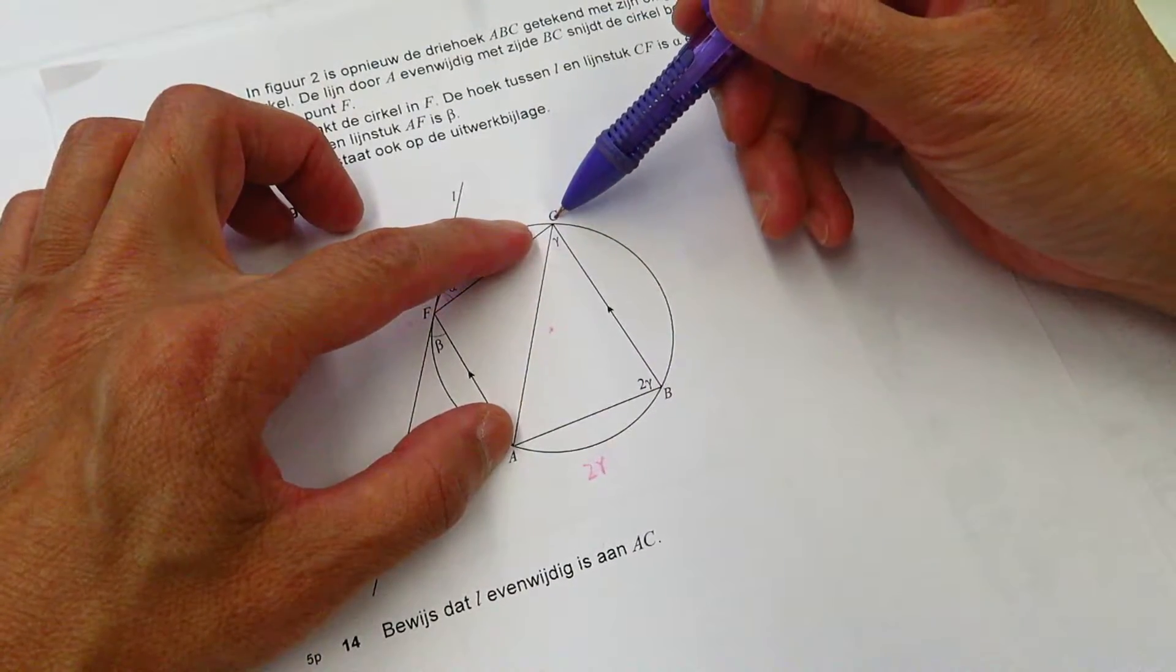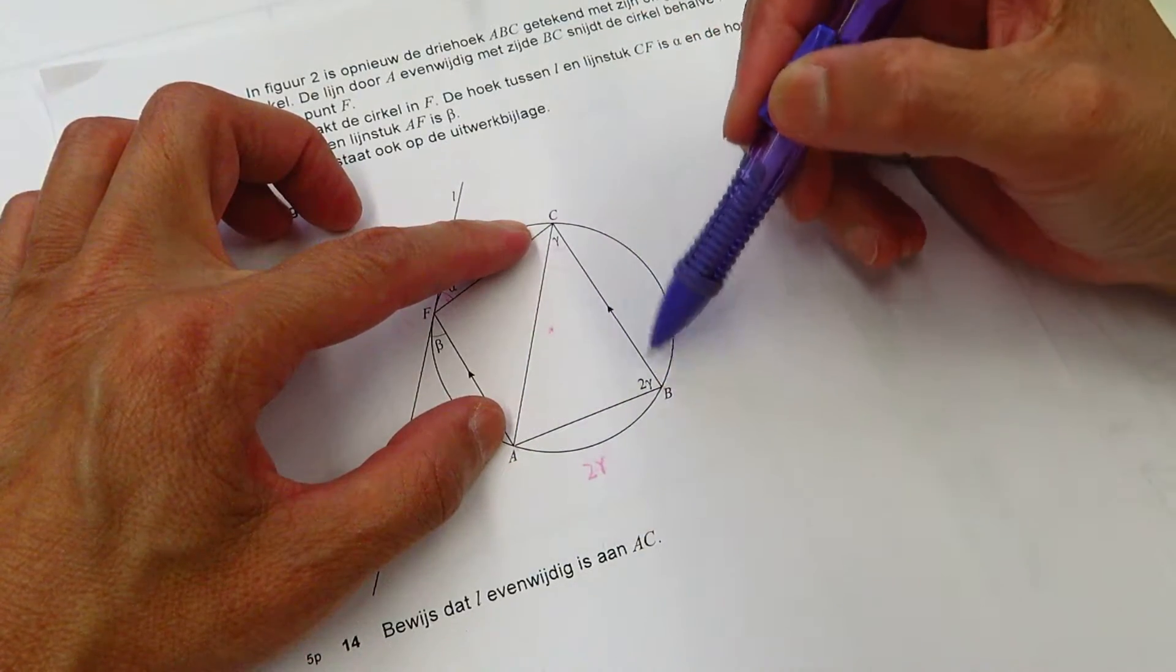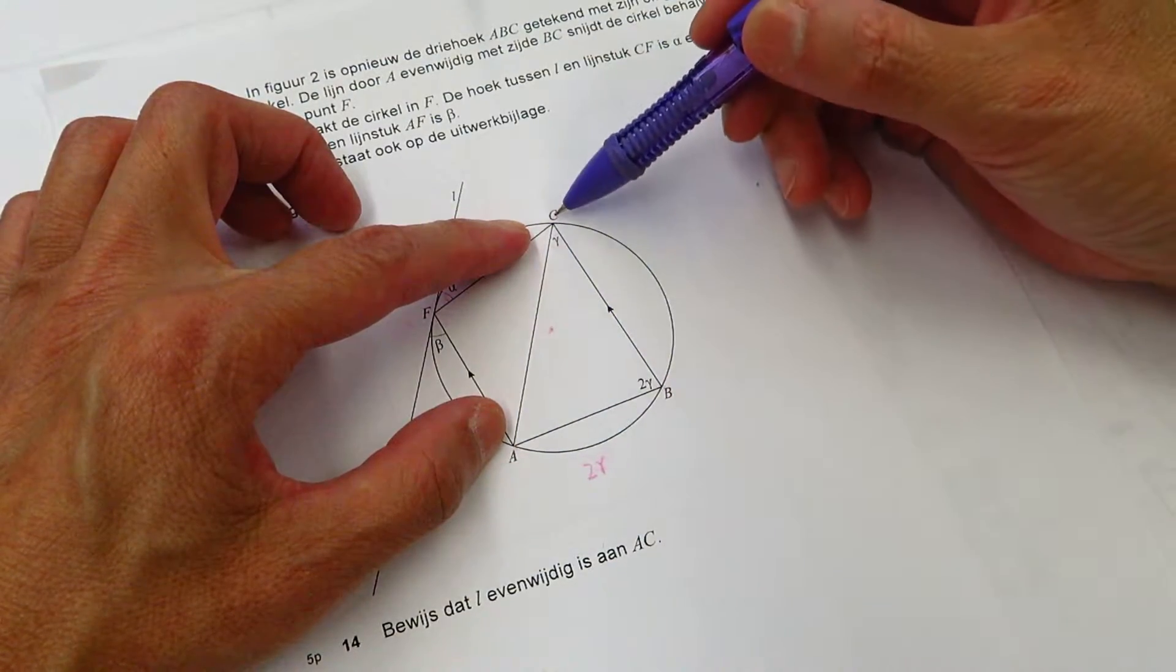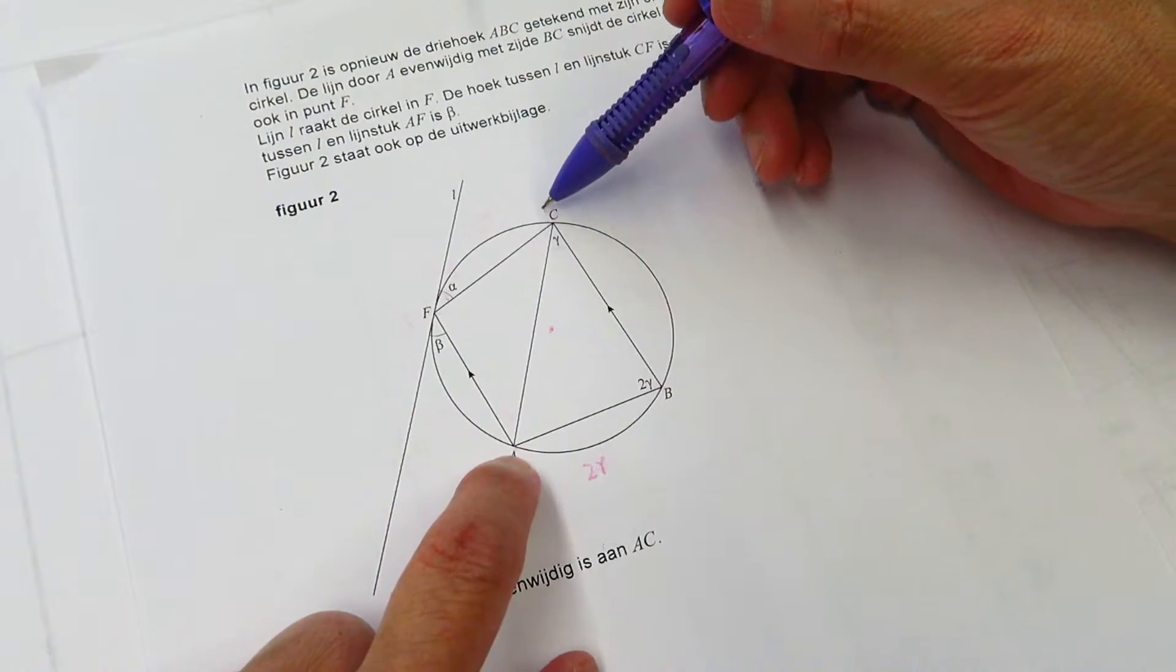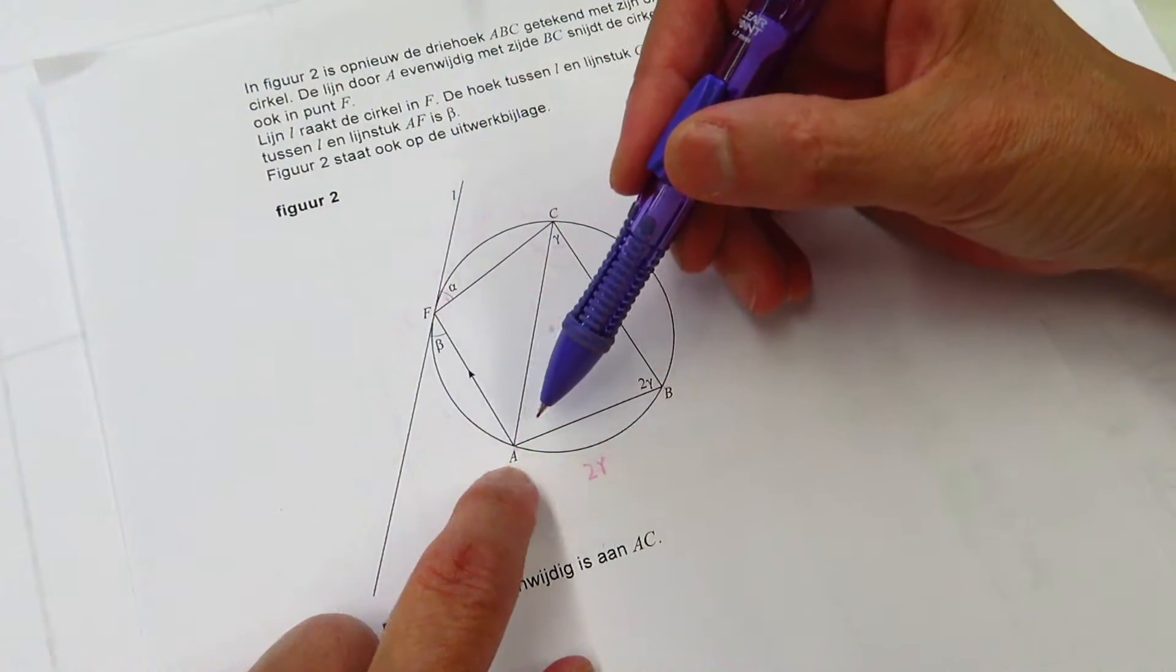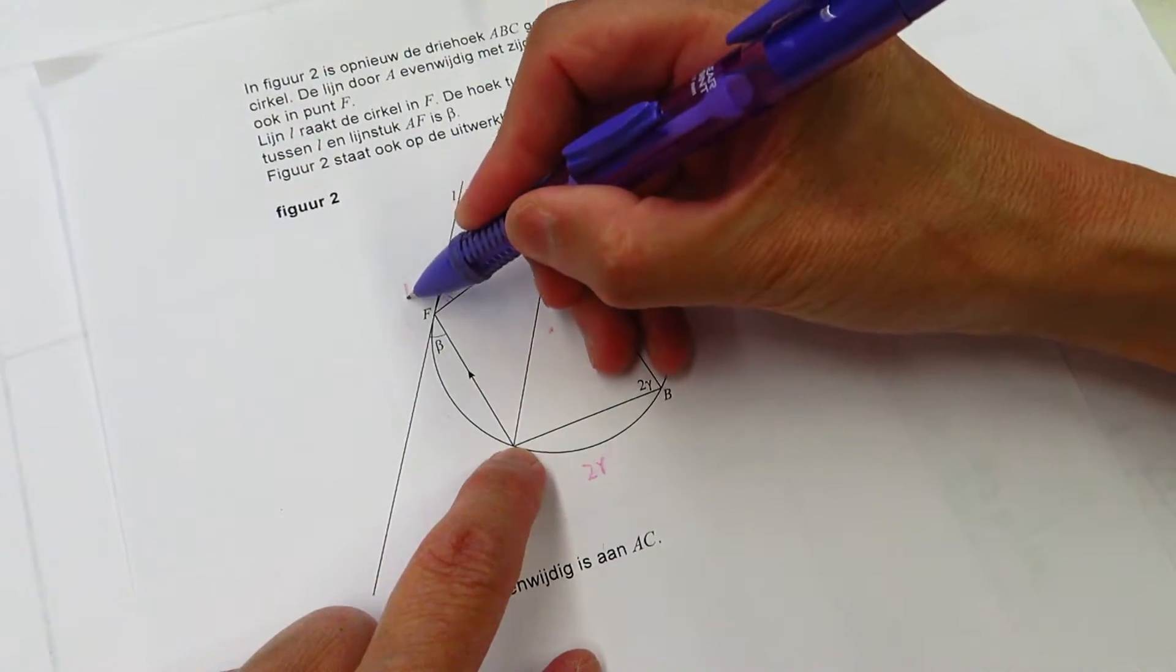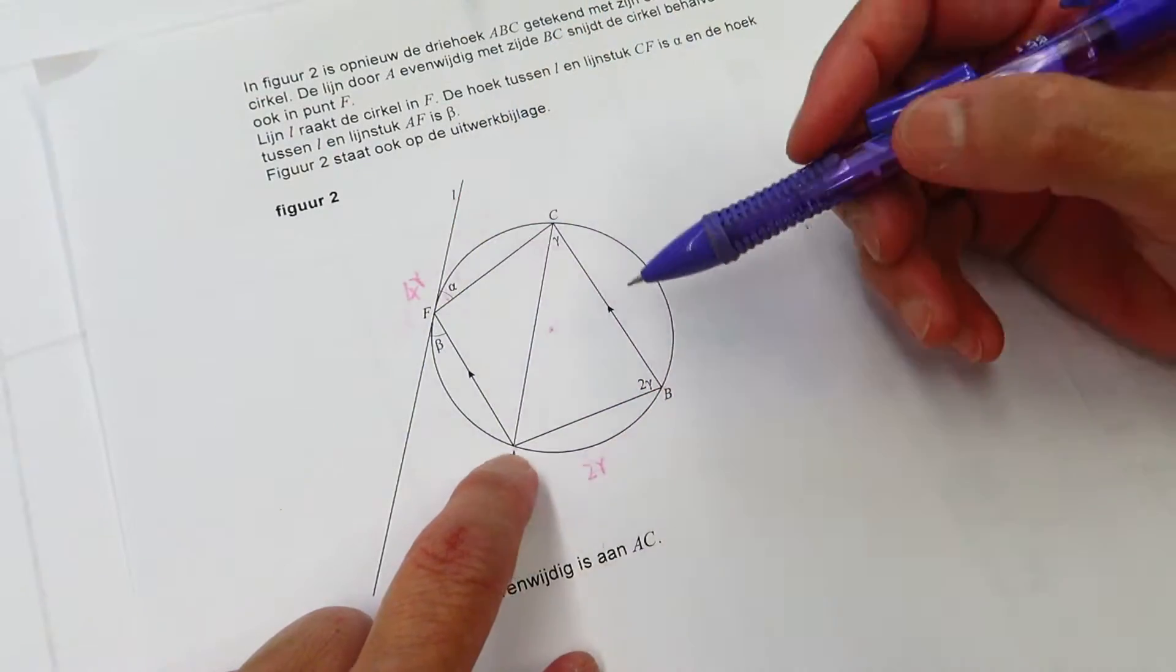Another given is CBA, the angle ABC is 2 gamma. So we know the whole arc from A, F, C, the arc AC is 4 gamma. The whole arc is 4 gamma.